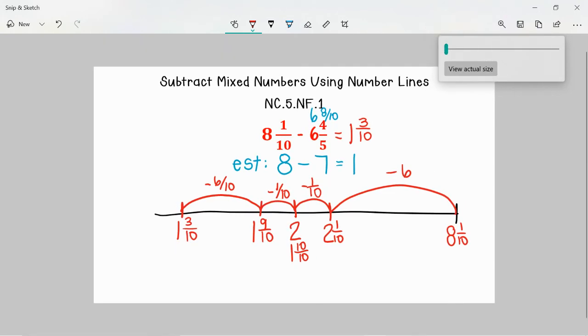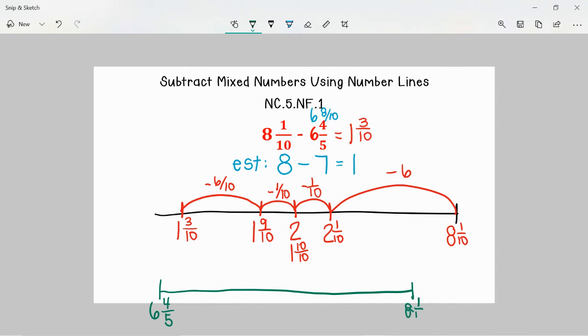I am going to make this a little bit smaller and show just another way that students might solve this same problem. Sometimes students like to find the difference by starting with the number that they are going to subtract and they are going to work their way up to 8 and 1 tenth. So we would make a number line, we would start at 6 and 4 fifths, and here we are using our knowledge of inverse operations to find the difference. We are going to figure out what is the distance between 6 and 4 fifths and 8 and 1 tenth. And so we know already that we are looking at 6 and 4 fifths as 6 and 8 tenths.